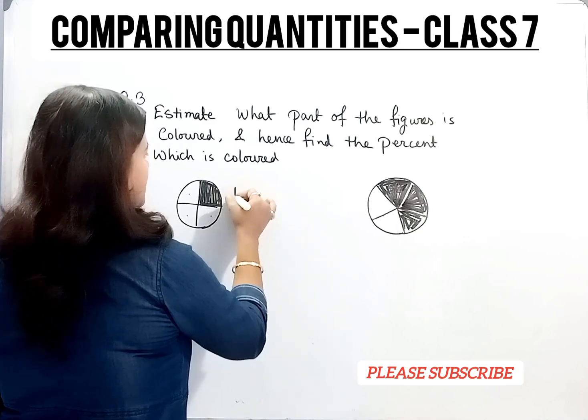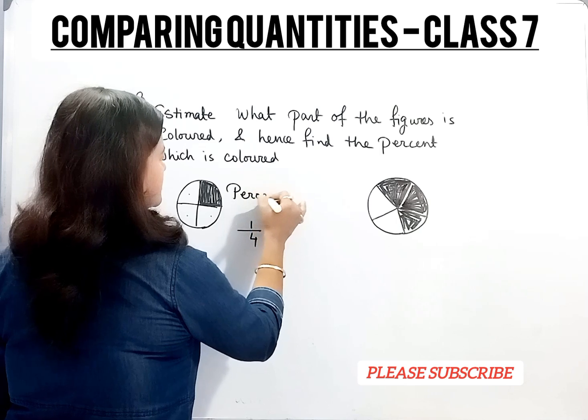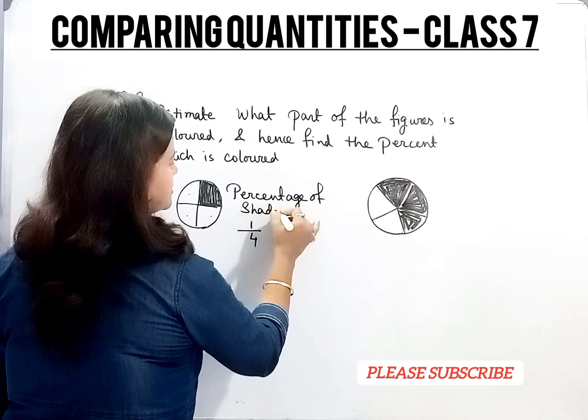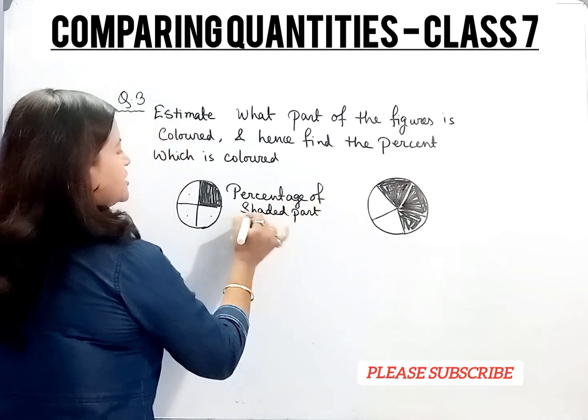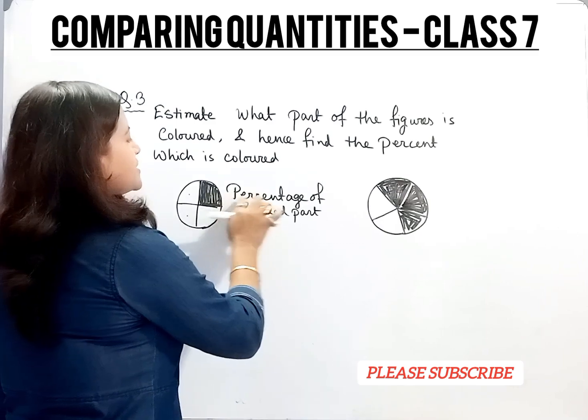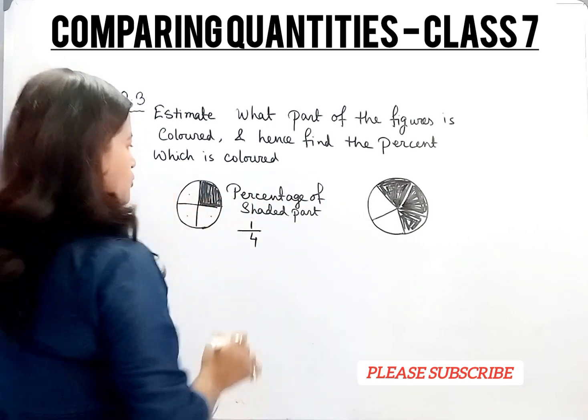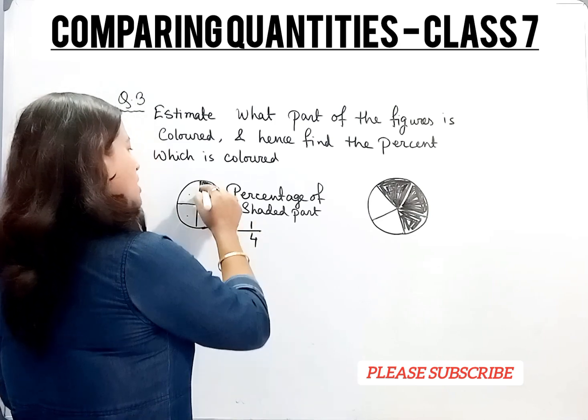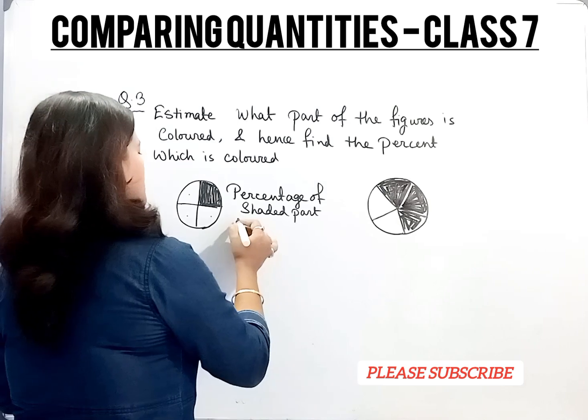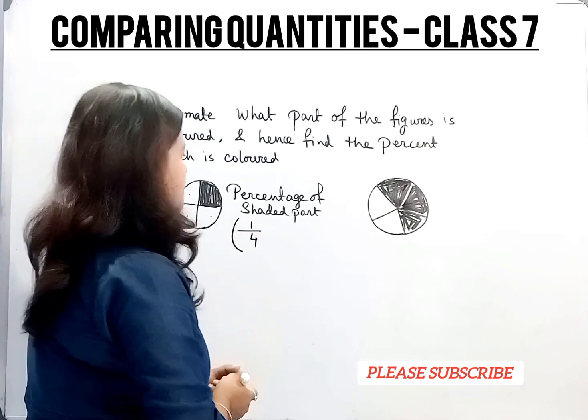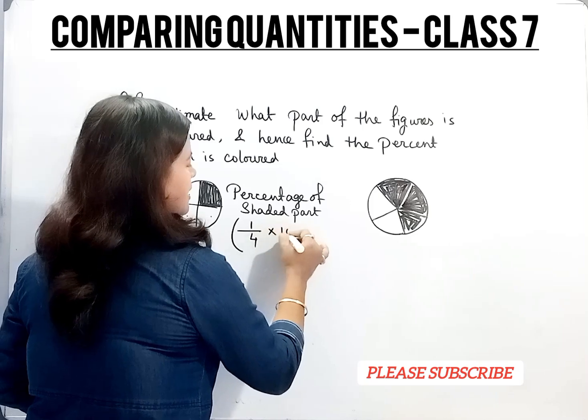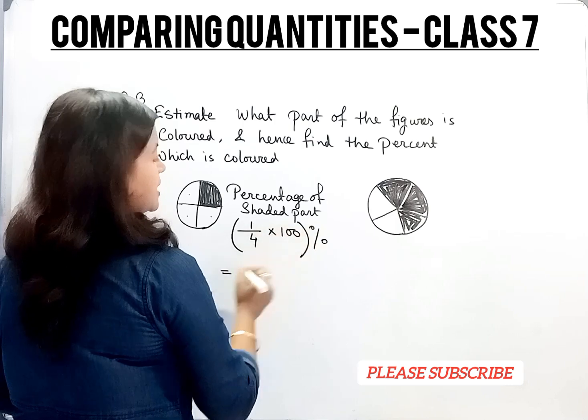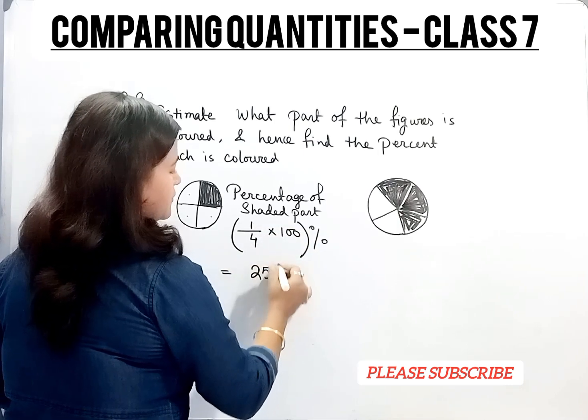Now convert it into percentage. Percentage of shaded part: 1 by 4. Total there are 4 parts, that's why 4, and 1 part is shaded. Now we have to convert it into percentage. We multiply by 100 and put the percentage sign. Now reduce it by 4. 4 into 100 gives us 25. So 25 percent.